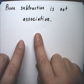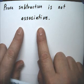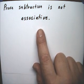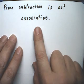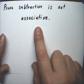And in order to prove that something is false like this, all you need is one counterexample. If you can come up with one counterexample that shows that subtraction is not associative, then that's all it takes.